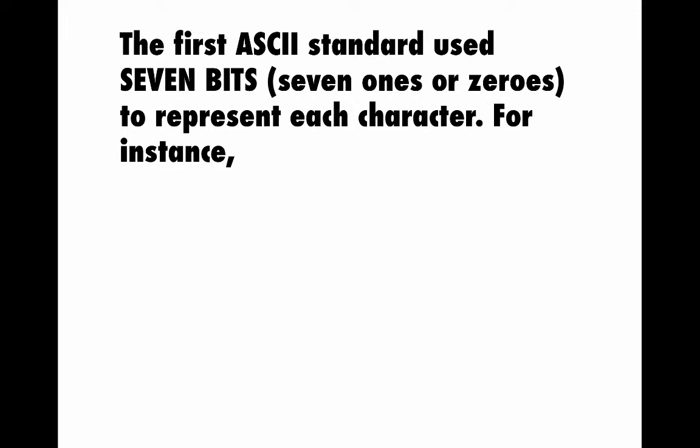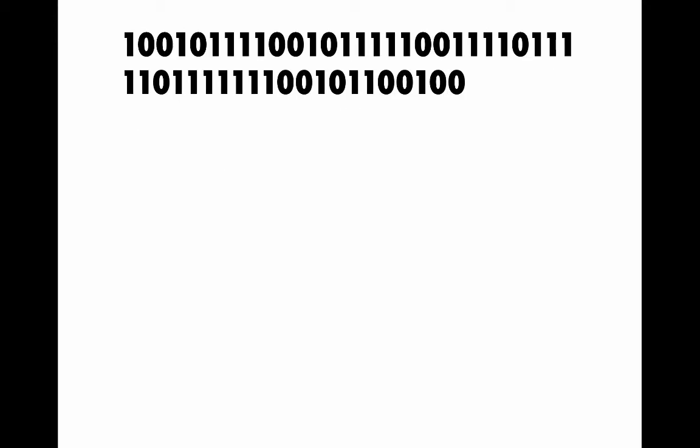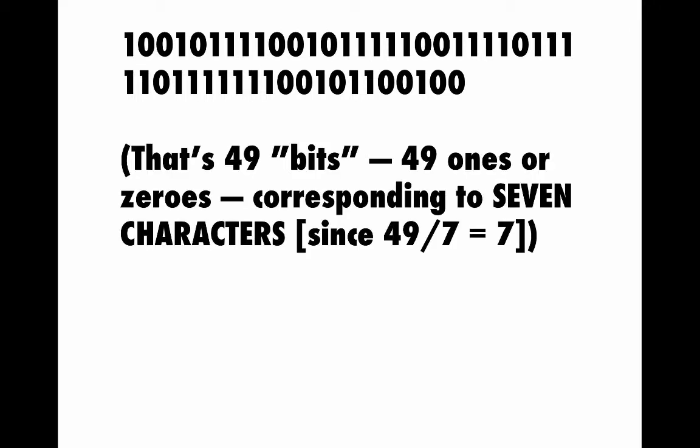So the first ASCII standard, which is the first standard of plain text, used seven bits, that means seven ones or zeros, to represent each character in the alphabet. For instance, this sequence of ones and zeros, which is very hard for a human being to read, a computer would easily, using the ASCII code, be able to turn that into a phrase.